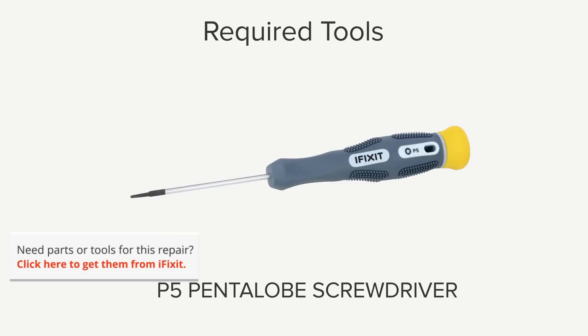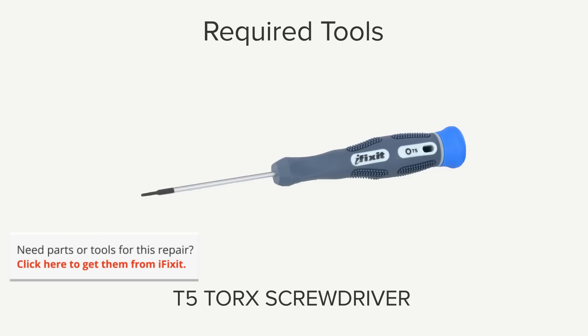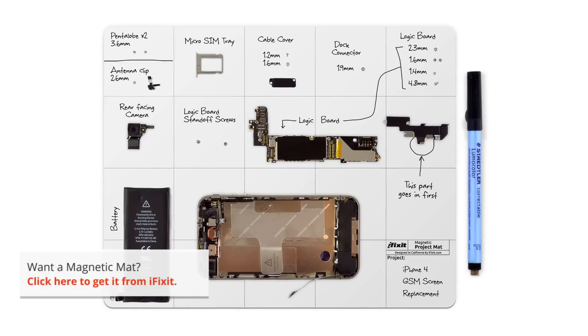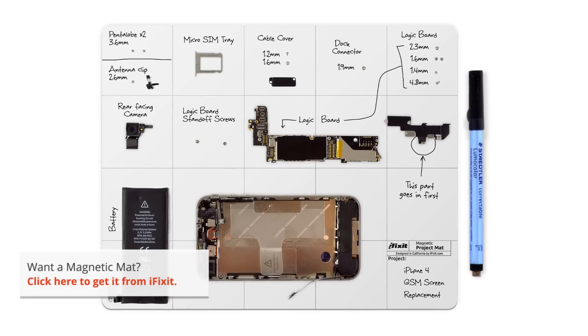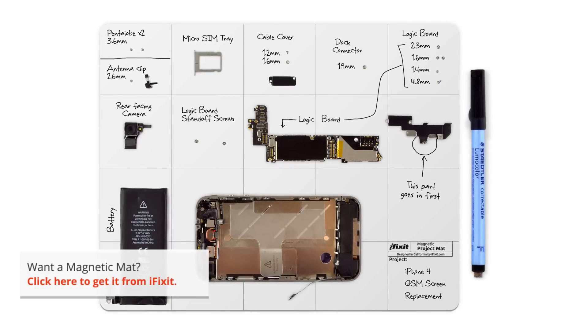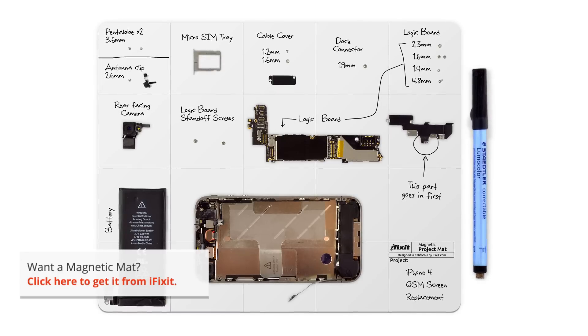Hi, I'm Gwendolyn with iFixit, and for this repair you're going to need a P5 Pentalobe screwdriver and a T5 Torx screwdriver. I have all the tools I need and I also have my magnetic mat. It's not listed as one of the required tools, but I never do a repair without it. It helps me stay organized and keeps me from losing important parts.